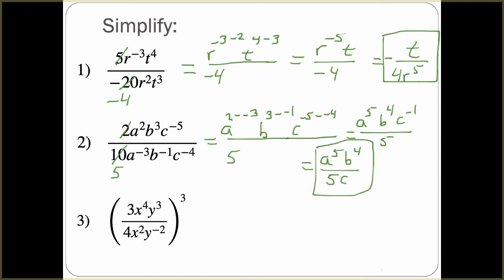There is another way you can do this — you can move your negative exponents around first. For example, bring a to the negative third to the top and multiply by a squared, then add the exponents. It is your choice, but I need to see your work showing how you arrived at your final solution.